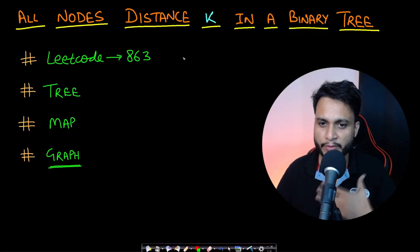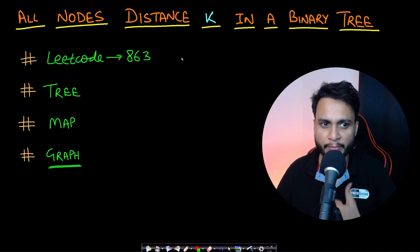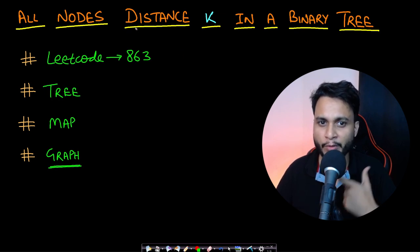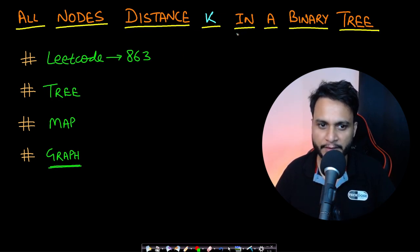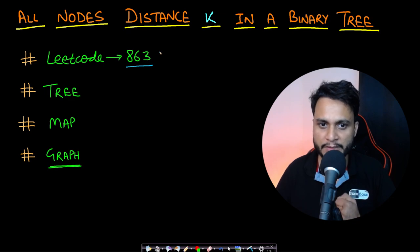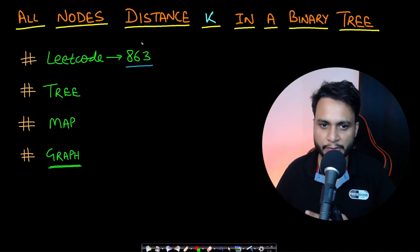Hello guys, welcome back to TakeDose. In this video we will see the problem of finding all nodes present at distance K in a binary tree. This is LeetCode number 863, and we will see all the follow-up problems once we are done discussing the entire solution, so stay tuned till the end.